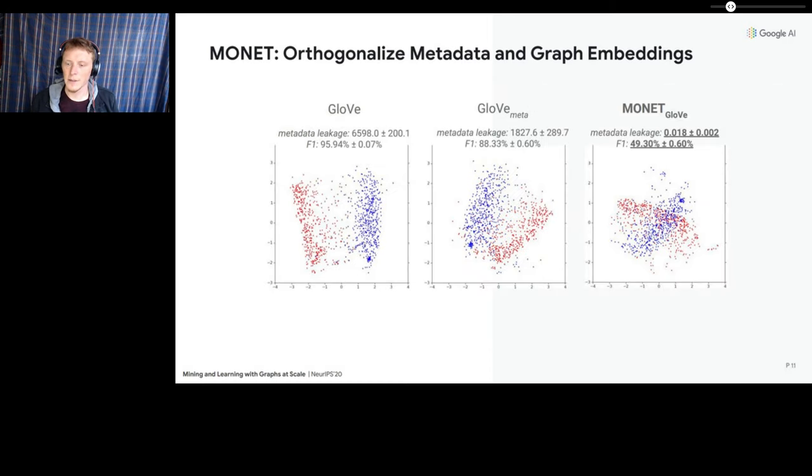Okay, so how does MONET work on the blogs graph? After applying MONET, the classifier that we applied earlier to the more naive methods predicted political party no better than random, which means the MONET embeddings were completely debiased from that attribute. Also, visually, we can see that the debiased embeddings trained with MONET results in the groups somewhat smeared together in 2D PCA space.